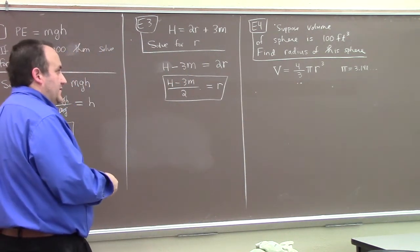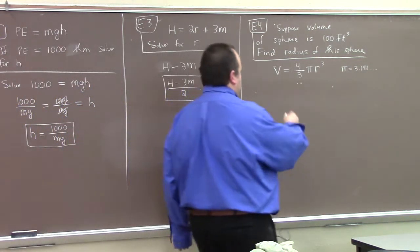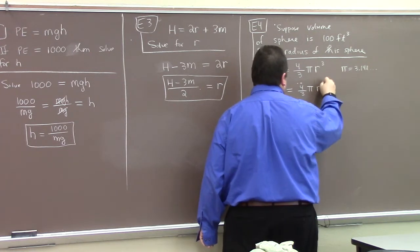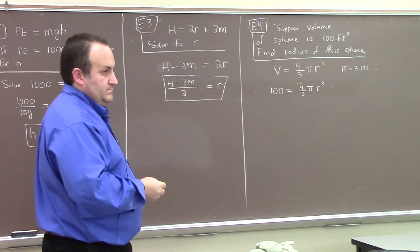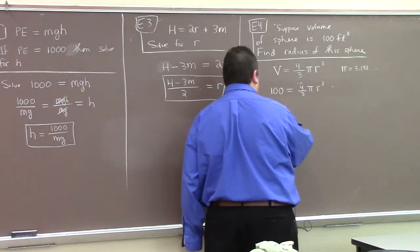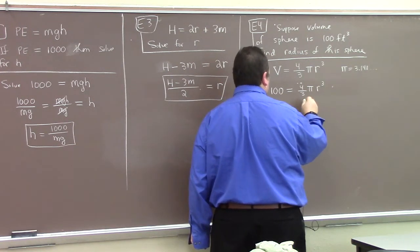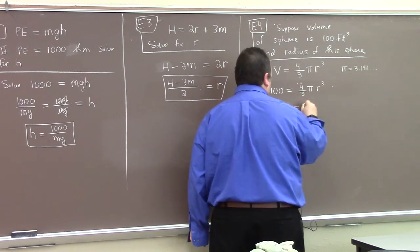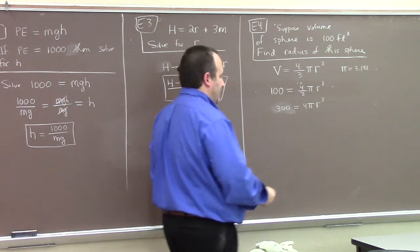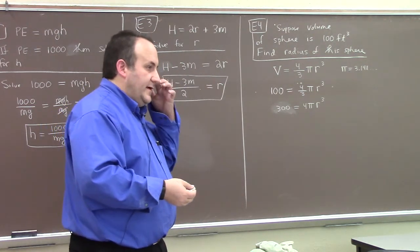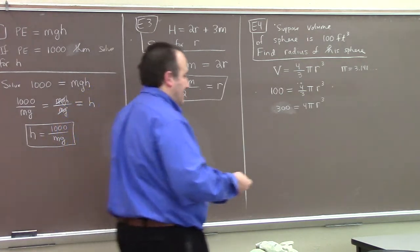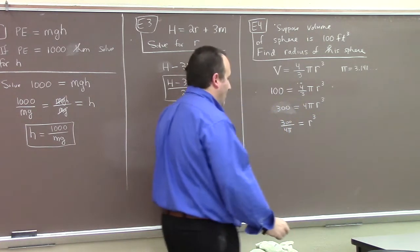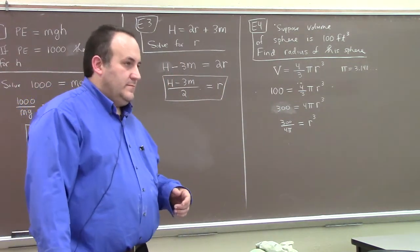We need to find the radius. So we have 100 equals four-thirds pi r cubed. To isolate r cubed, multiply both sides by 3 — that gives 300 — then divide by 4π. So 300 over 4π equals r cubed.